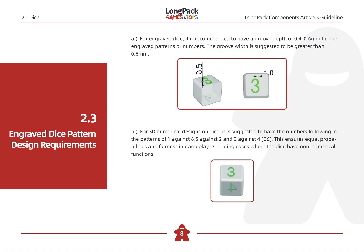For 3D numerical designs on dice, it is suggested to have the numbers follow the patterns of 1 against 6, 5 against 2, and 3 against 4. This ensures equal probabilities and fairness in gameplay, excluding cases where the dice have non-numerical functions.